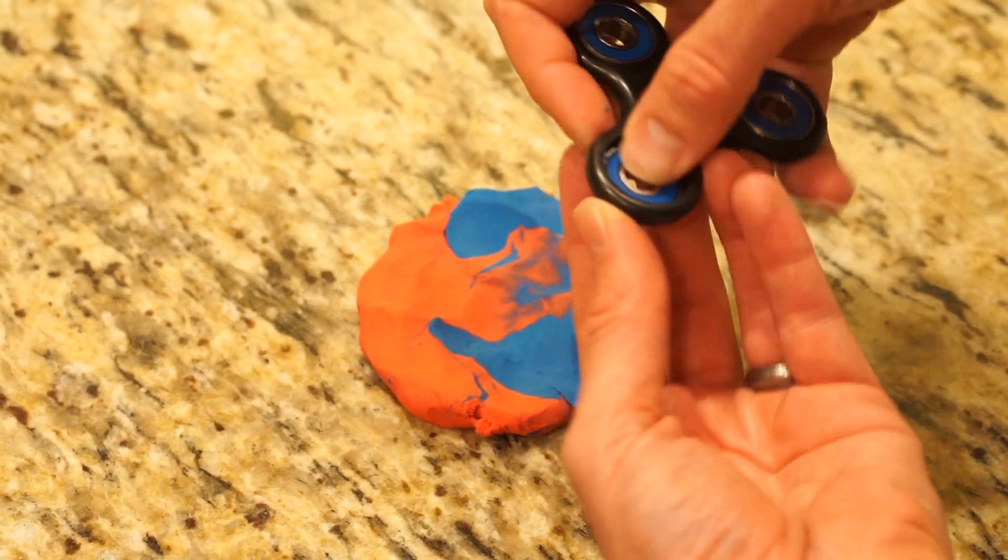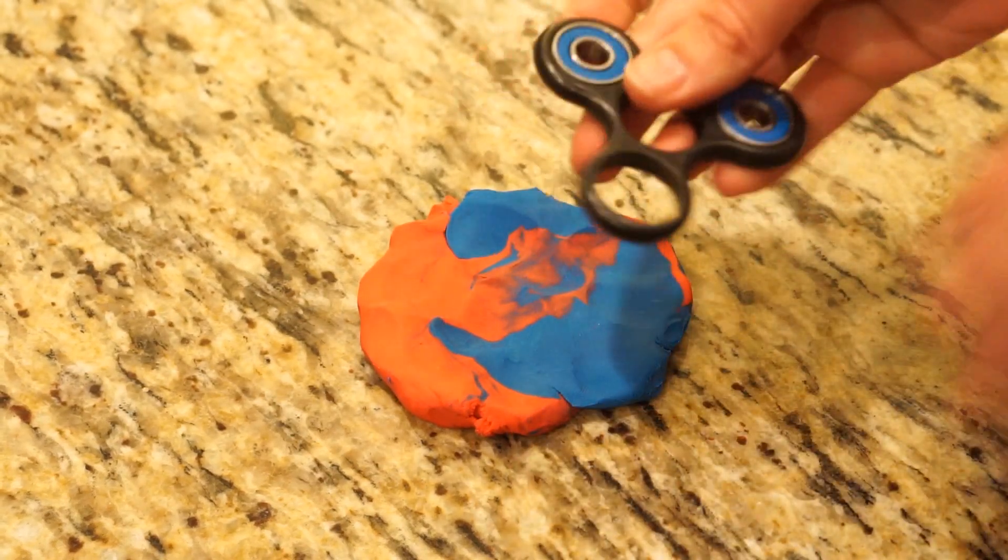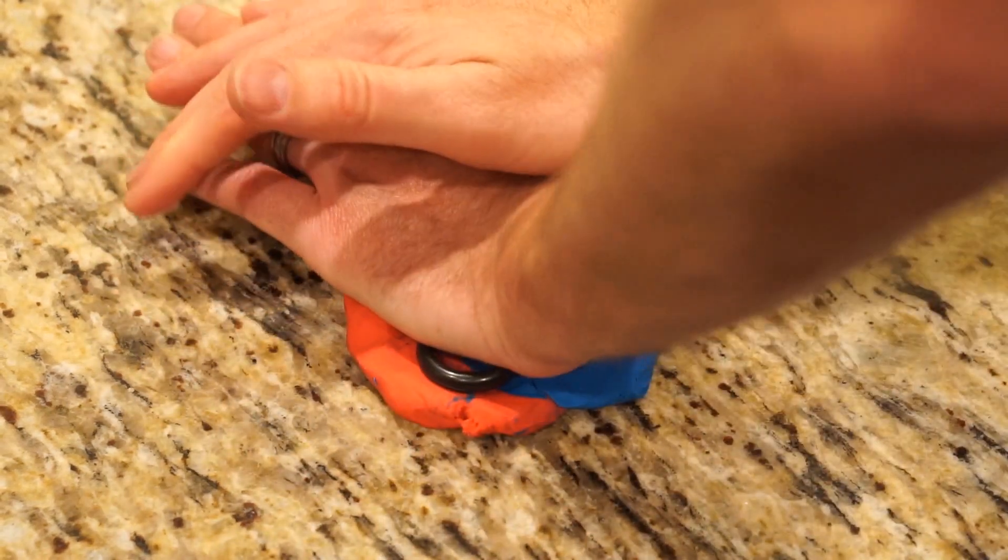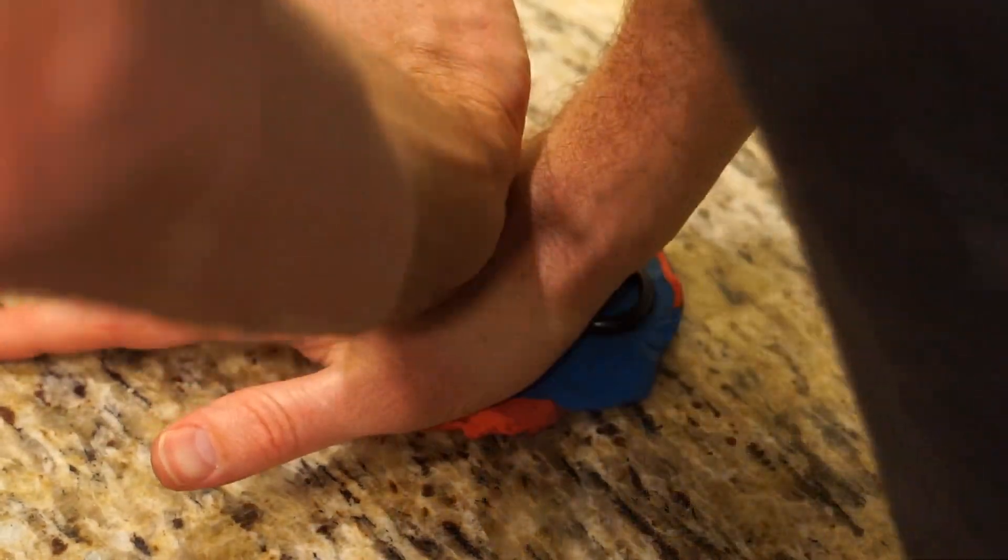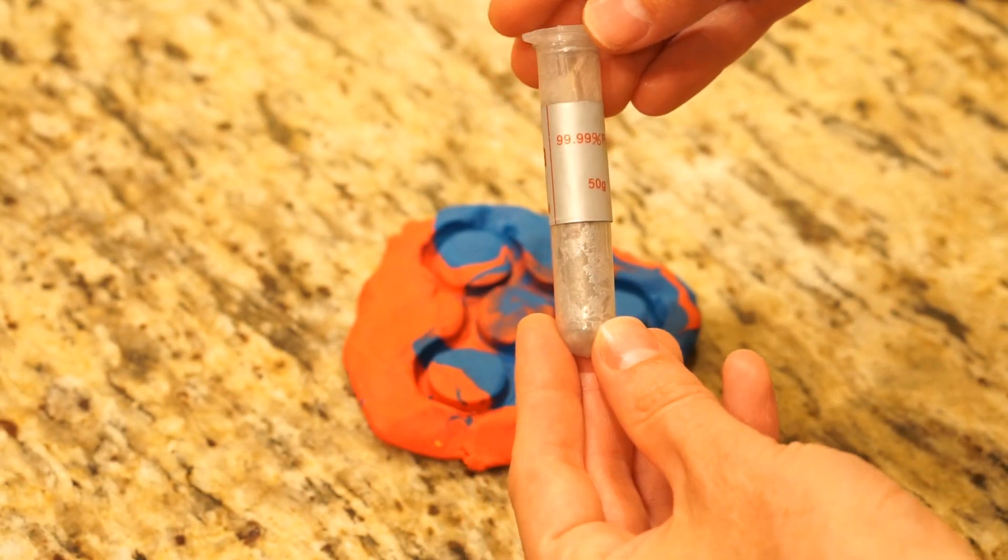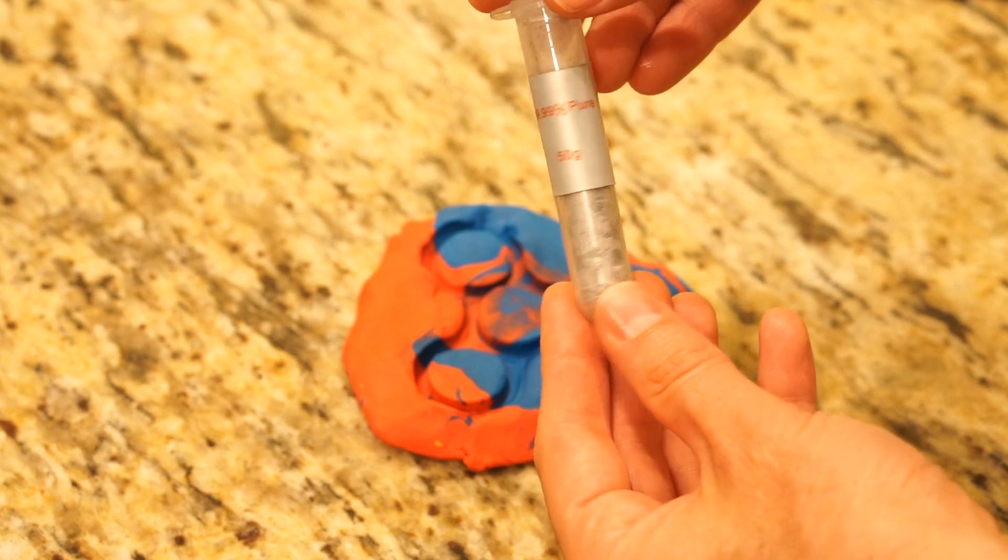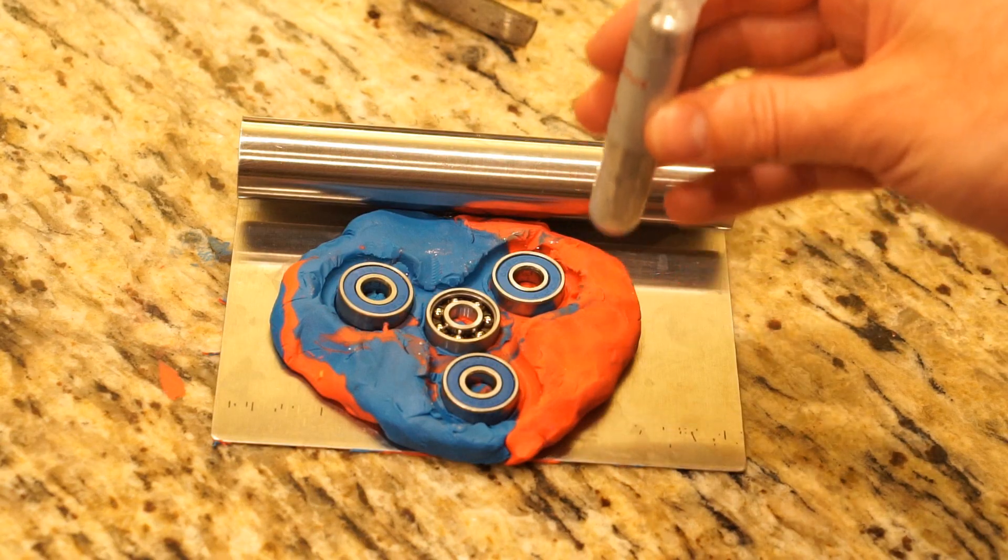Okay, so I'll make my fidget spinner mold here. I've got my pure gallium here, 99.99% pure. I'm gonna try a slightly different way so I don't have to put the bearings in after.